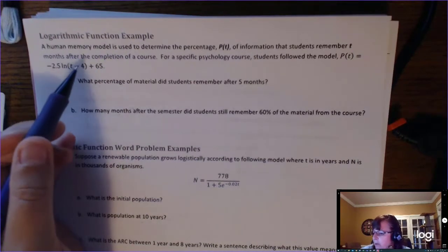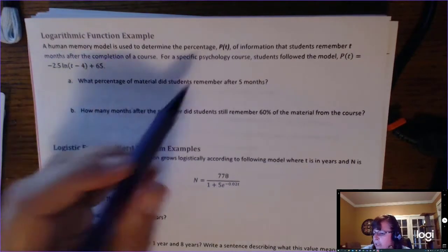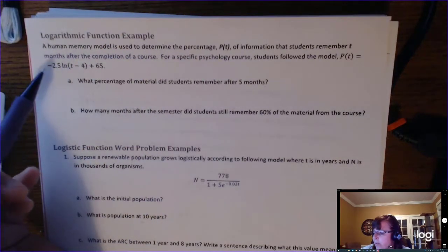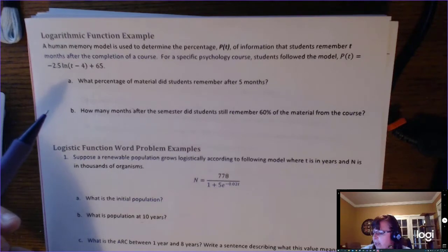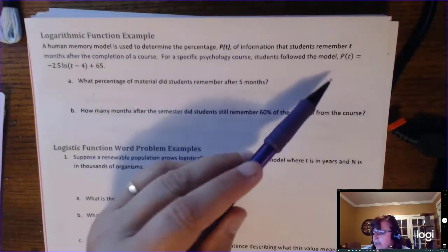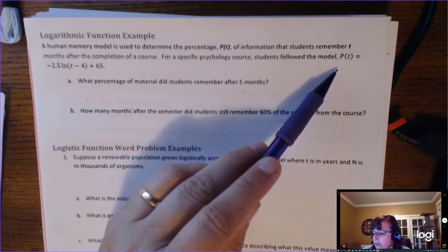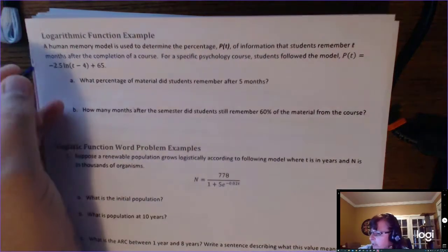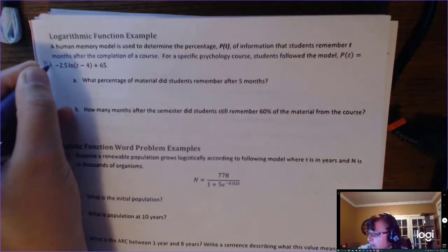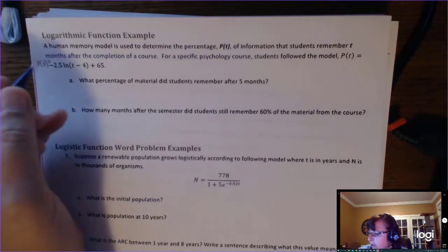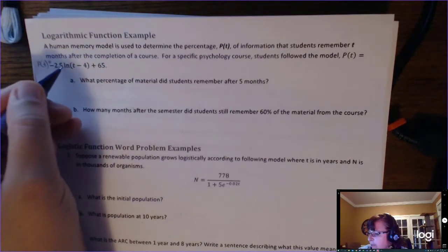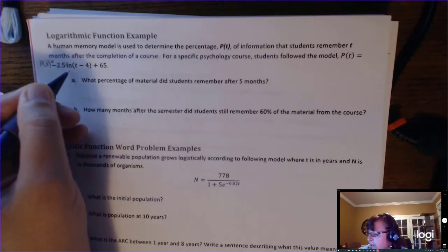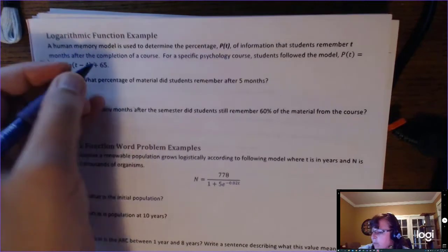A human memory model is used to determine the percentage P of T of information that students remember T months after the completion of the course. For a specific psychology course, students follow the model P of T equals negative 2.5 times the natural log of T minus 4, plus 65.